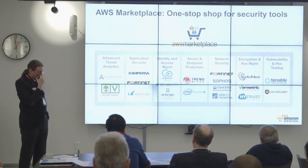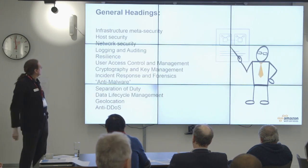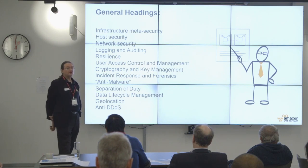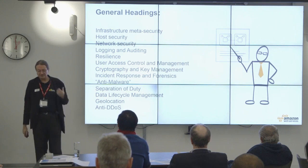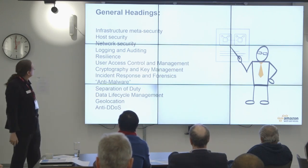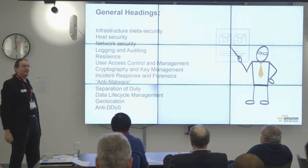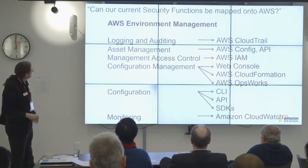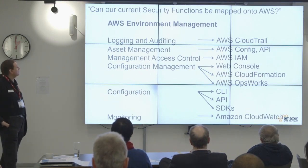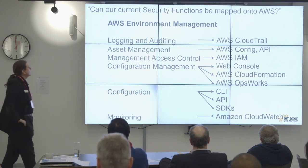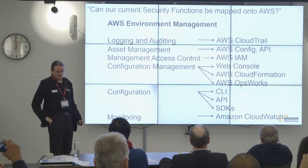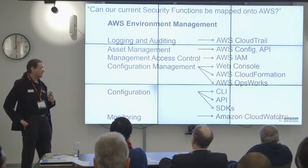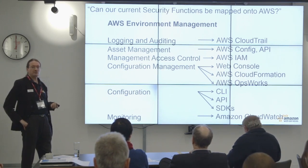If I were to go creating a control mapping framework for AWS, these are the headings I'd normally start with. I have actually done this exercise, but it turned into a great big spreadsheet and slides aren't really the format to show it. As a few examples: if you need requirements around environment management, there are some nice mappings here. Logging is something I'm going to talk about in more depth later. My favourite logging policy is: if something moves, log it; if it doesn't move, watch it till it moves, then log it.